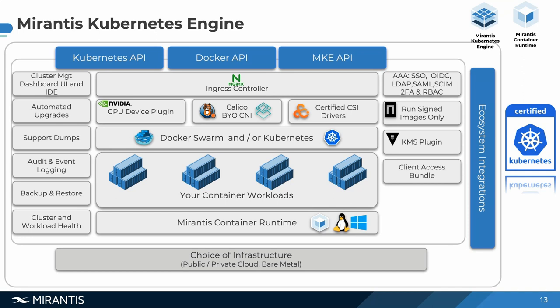The Mirantis Kubernetes engine comes with all of these out of the box. You have your ingress controller through NGINX, an NVIDIA GPU plugin, networking through Calico — or if you already have your own networking interface, you can connect it up as well. It's batteries included but also swappable. We have all the drivers needed, signing, cluster management dashboards, automated upgrades, and role-based access control. Everything is out of the box so when you want to spin up your own Kubernetes clusters, all you need is to run the installation and you're ready to start running.